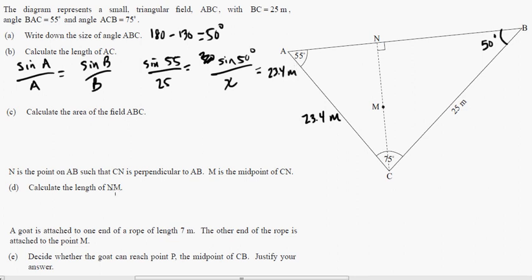For the next part, it says calculate the area of the field ABC. Well, that's easy because we have this side here and this side here. So remember that the formula is the area equals one-half AB sine C. So we can just do, in this case, one-half.